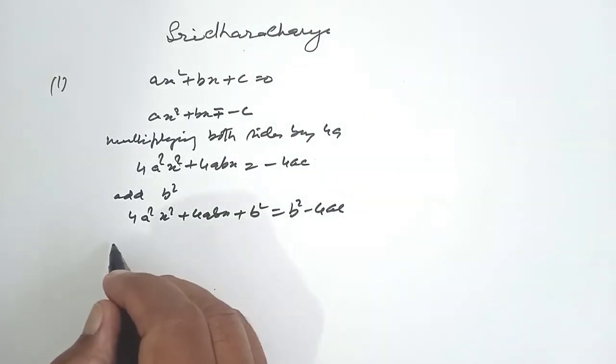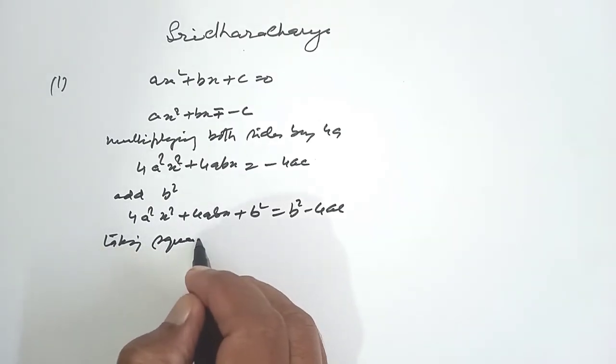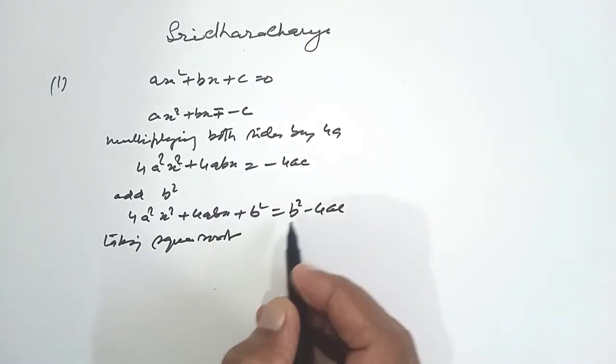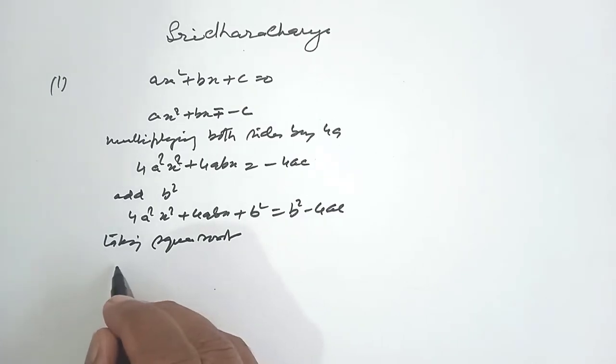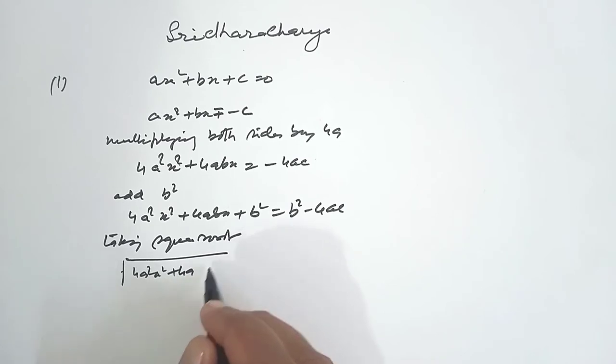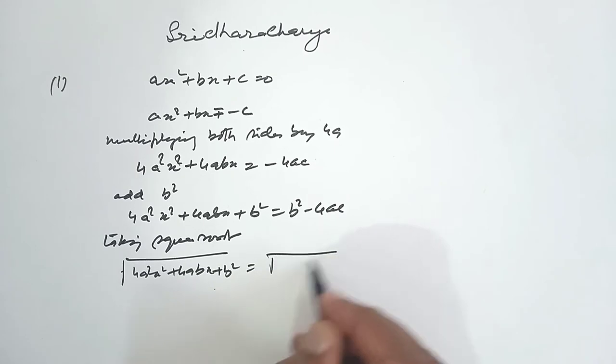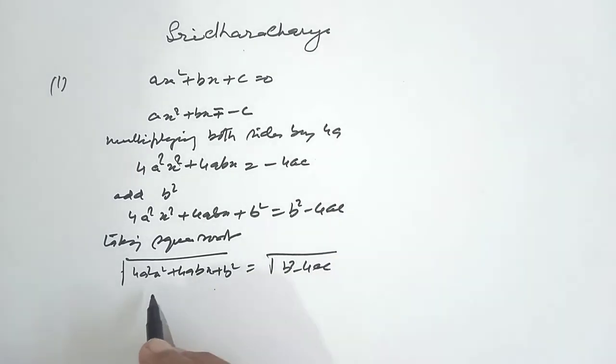Now taking square root, we get... this is the whole square, the whole square of 2ax plus b.